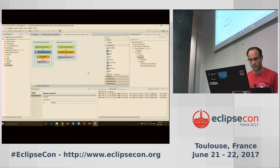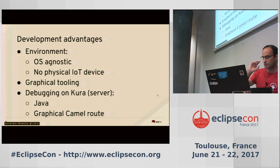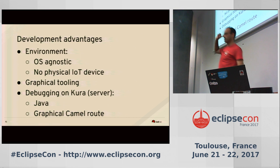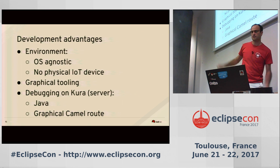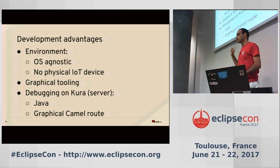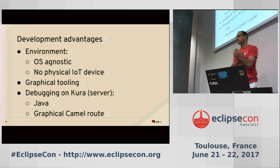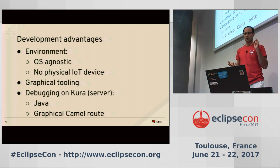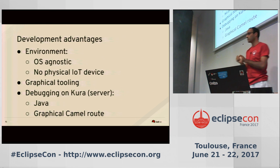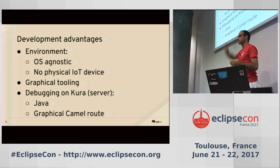That was the demo. To mention all the development advantages: you are OS-agnostic — as you can see I'm on Windows and the Kura server is not running on Windows currently. Using the Docker image you can develop on your Windows machine. You don't need any IoT device to start working on it. You have graphical tooling, Java debugging on the Kura server, and graphical Camel route debugging too.